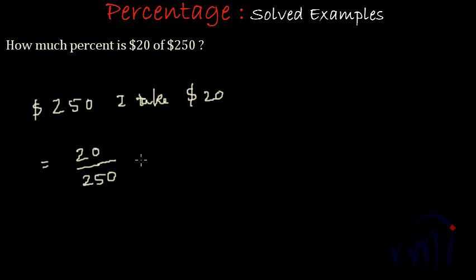So to convert a fraction into percentage what we do, we just multiply that by 100. This 0 and this 0 will cancel 25, 1's are 25, 25 4's are 100 and 2 4's are 8. So $20 will be 8% of $250.